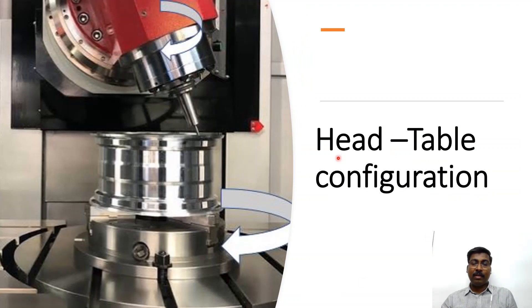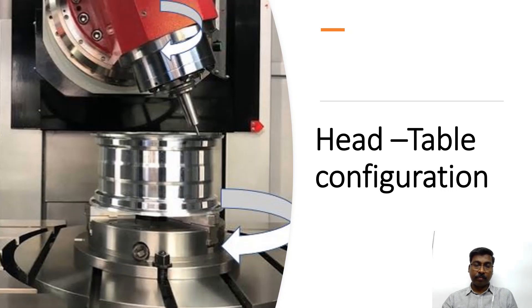The next configuration is head-table. In this case, the tilting axis is configured on the Y-axis, so it is the B-axis, and the rotary axis is configured on the Z-axis, so it is the C-axis. The next one is head-head configuration, where both the tilting and rotary axes are configured on the head or the spindle. The tilting can be the B-axis or A-axis depending on the machine, and the rotary axis configured about Z-axis is the C-axis.